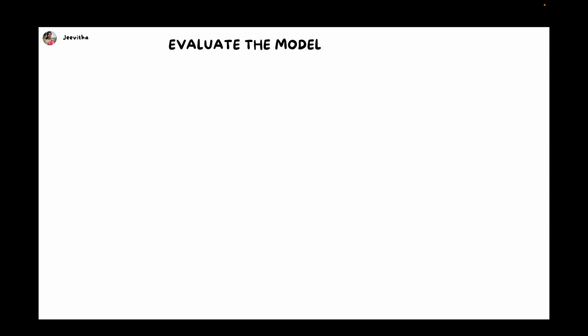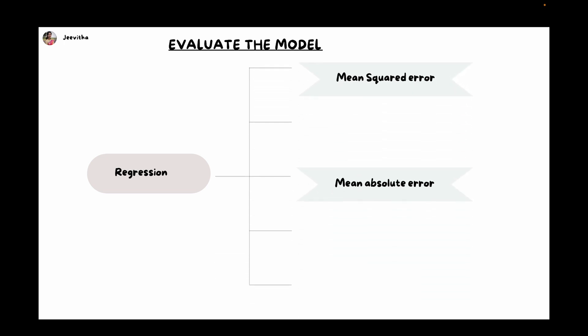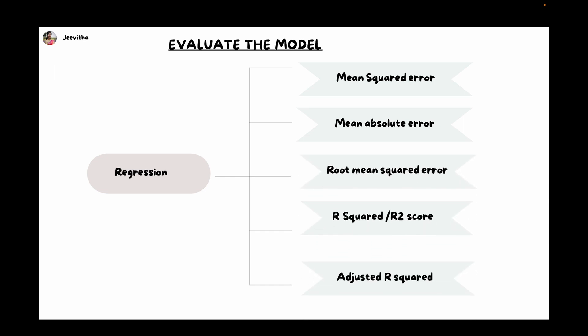Evaluating is a very important step — without evaluating, you won't know how good your model is. For regression, we have different metrics such as mean squared error, mean absolute error, root mean squared error, R2 score, and adjusted R2 score. Error functions give the average of mistakes made by the model. R2 score and adjusted R2 score tell how good the model is — R2 score range is 0 to 1; if near 1, it's a good model; if near 0, it's a bad model.